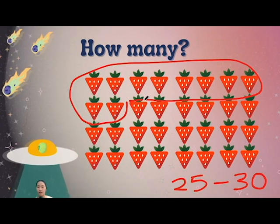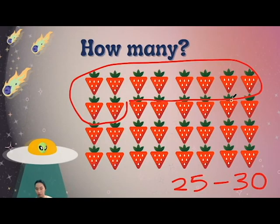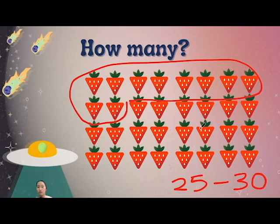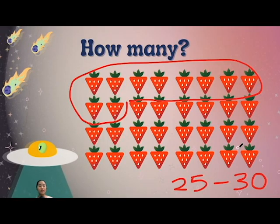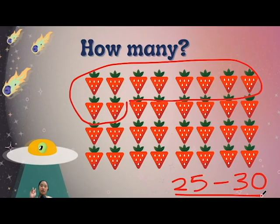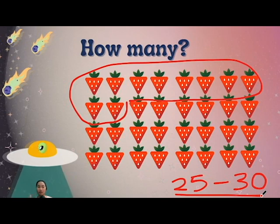So 10, 11, 12, 13, 14, 15, 16, 17, 18, 19, 20, 21, 22, 23, 24, 25, 26, 27, 28, 29, 30, 31, 32. So it's actually 32. We're off by 2. But it is good enough. And that's the spirit of estimating.